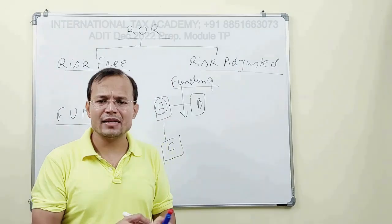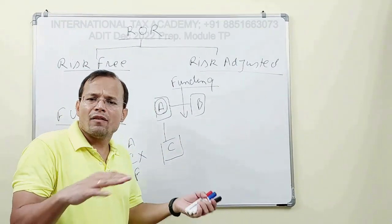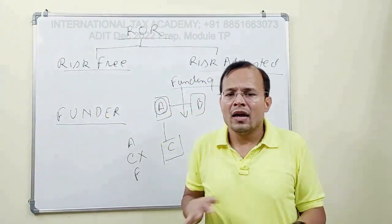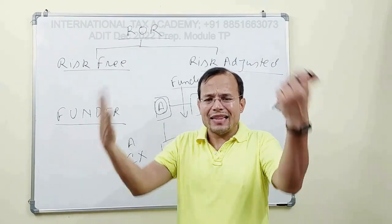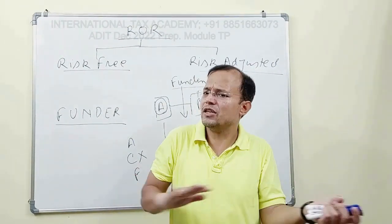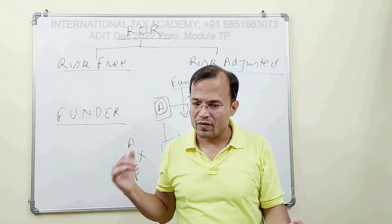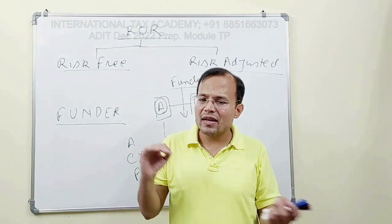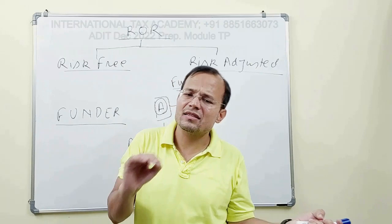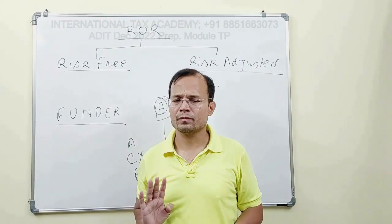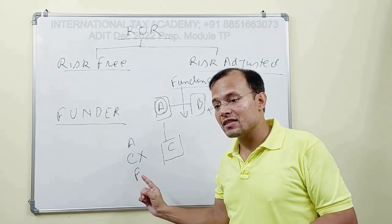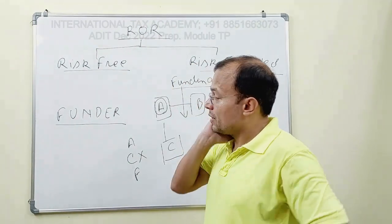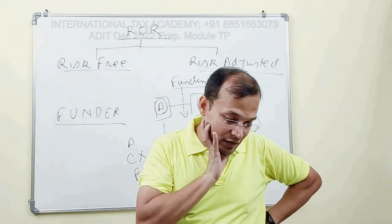A risk-free rate of return is the rate of return which any associated entity will be entitled to when the risk on that party is nil — ideally zero. Risk in any transaction can never truly be zero, but risk-free rate of return virtually means the risk is almost close to zero. So in this case, A will be entitled to only a risk-free rate of return.